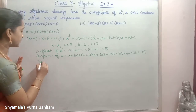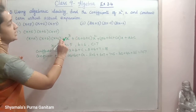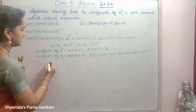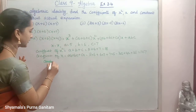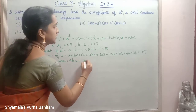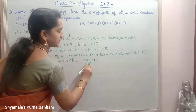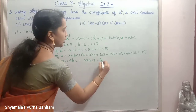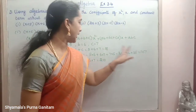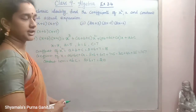Then the constant term: we have to multiply abc. a is 5, b is 6, c is 7. 5×6 is 30, 30×7 is 210. So the three answers are: 18 is the coefficient of x squared, 107 for x, and 210 is the constant term.